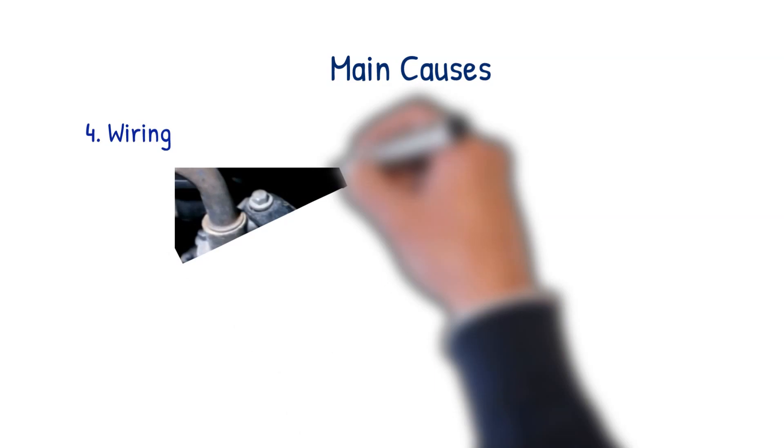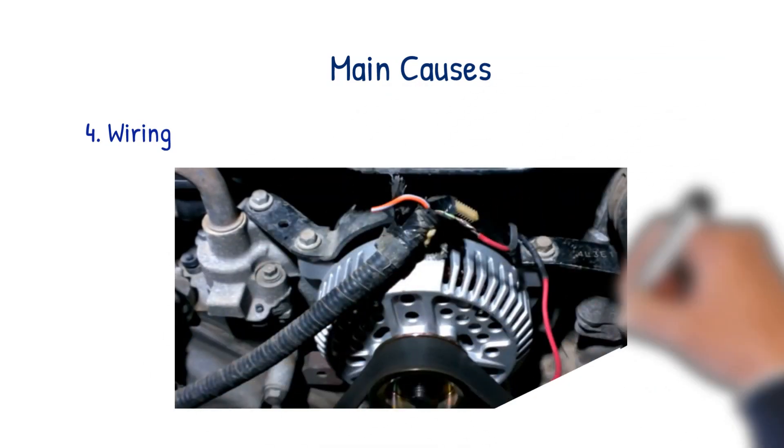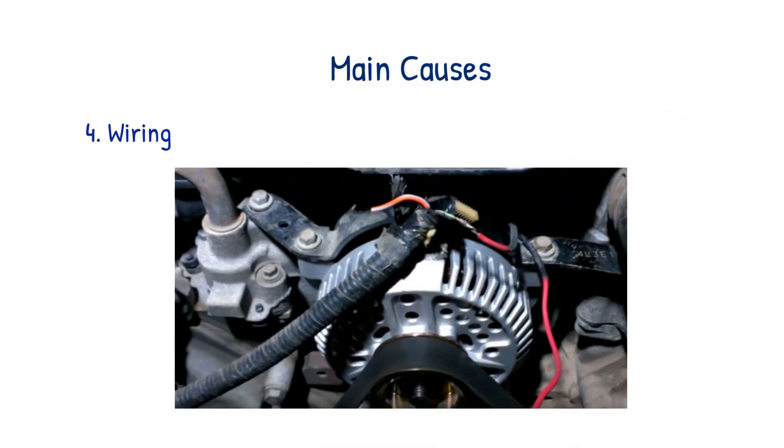There are several wiring components in a vehicle that help produce power for the alternator. All it would take is for one wire to be disconnected or cut for power to stop being generated. As a result, the alternator won't be able to charge the battery until the wire is replaced or repaired.